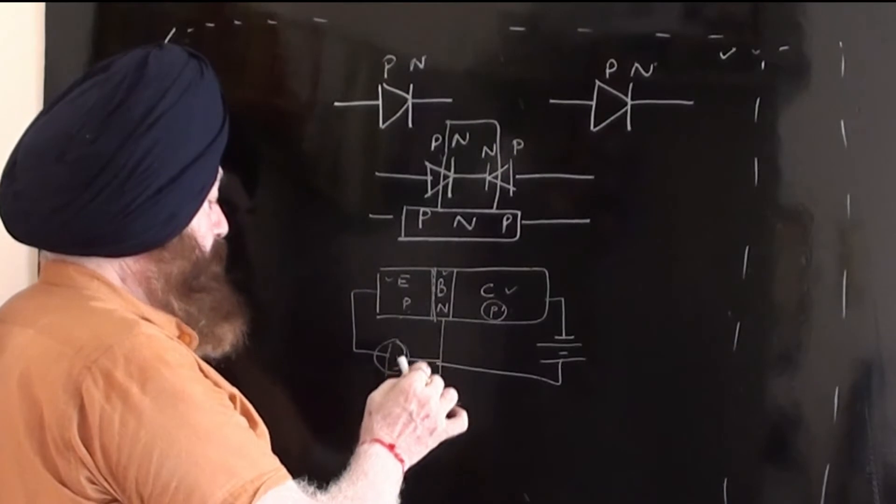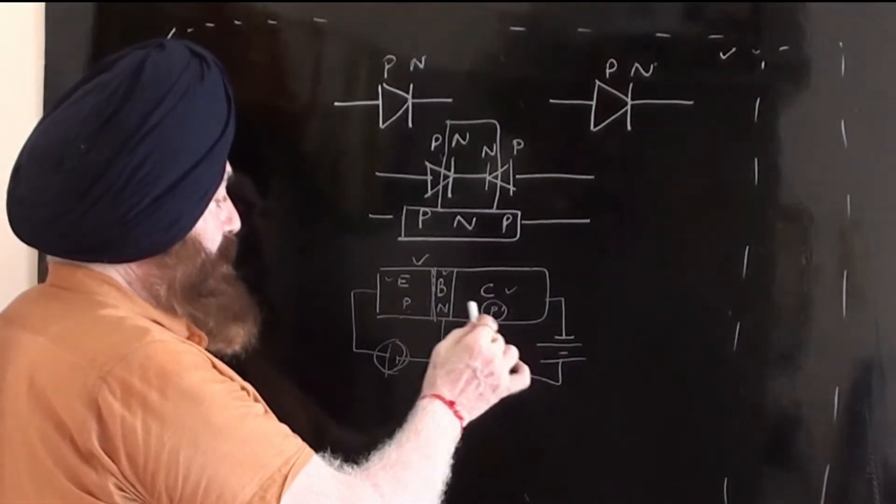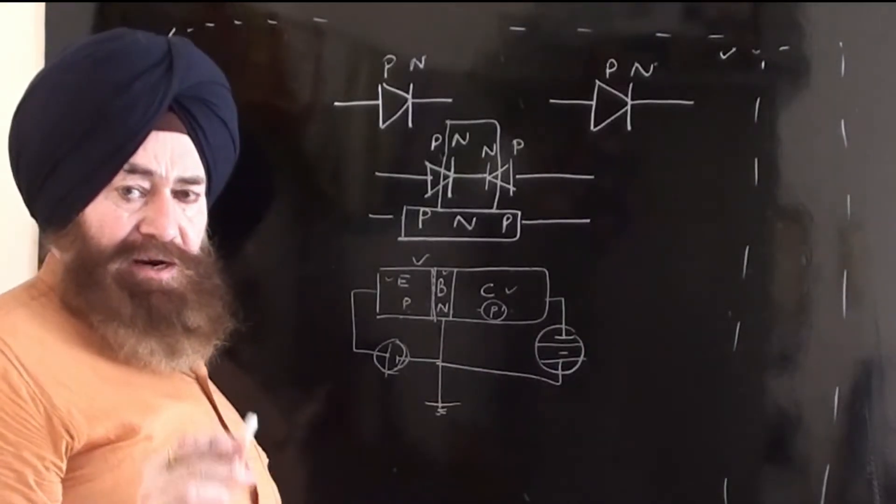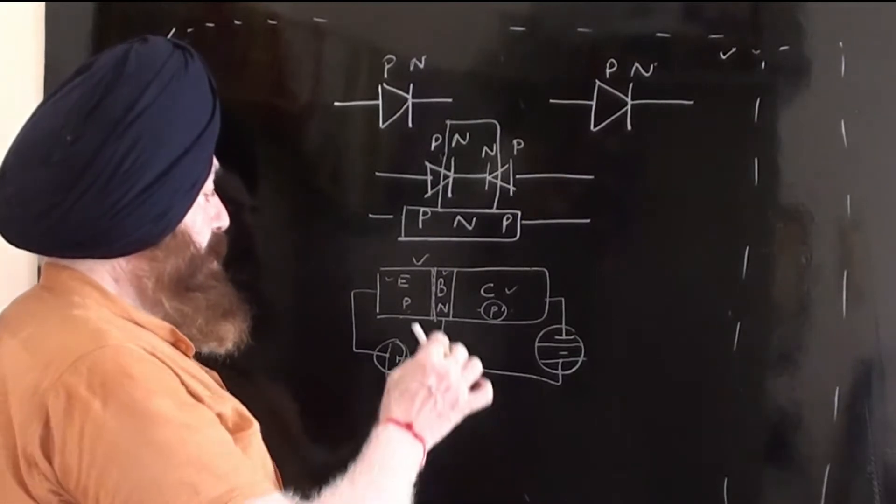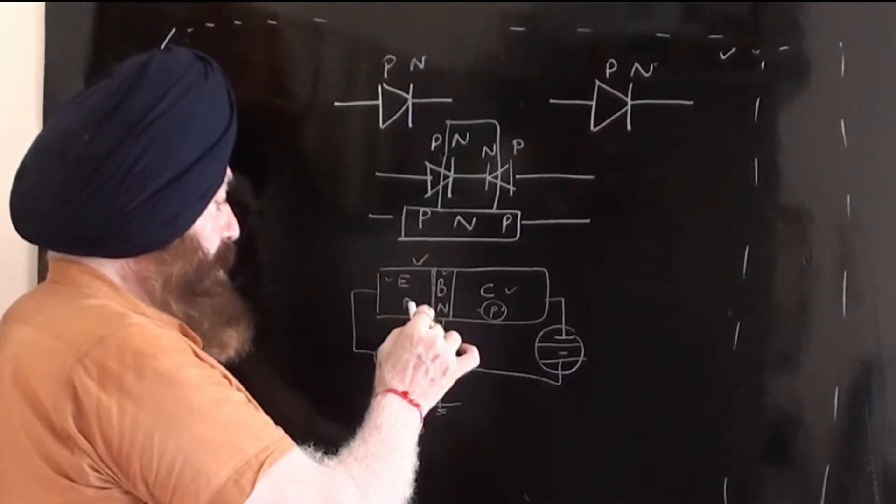Whenever PN junction forward biased, it behaves like a low resistance. Whenever the PN junction is reverse biased, it acts like a high resistance.